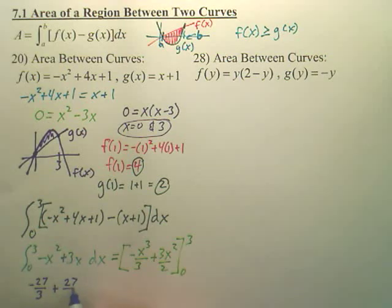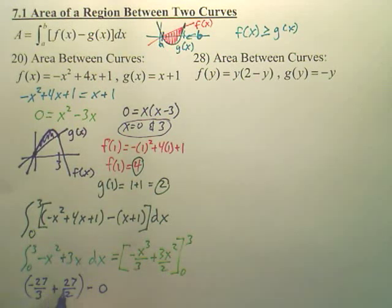looks like 27 over 2 minus, isn't this going to be 0 when you plug in 0? This one's going to be 0 when you plug it in. So, it looks like here's my answer.